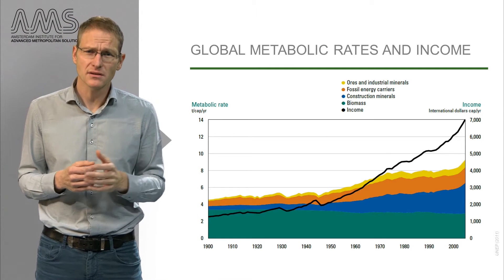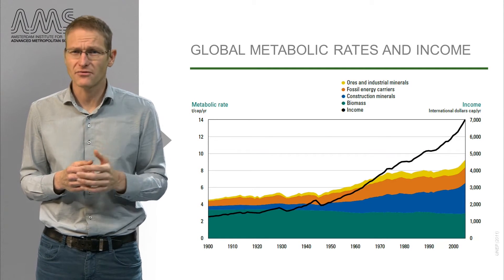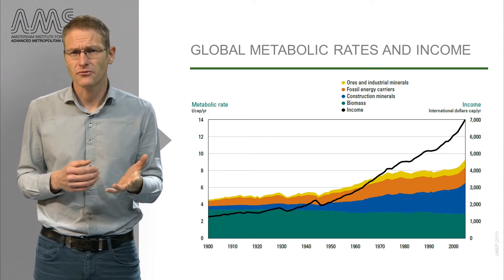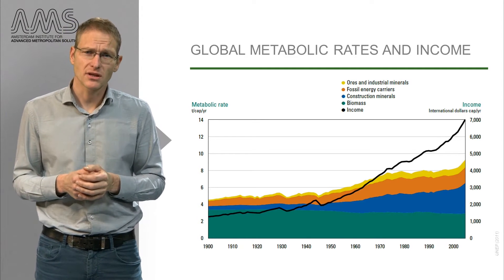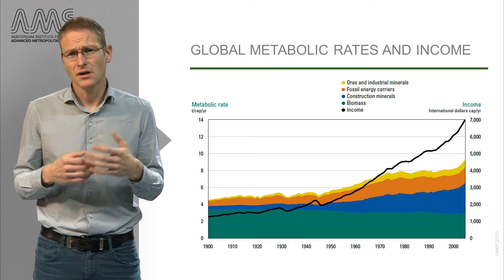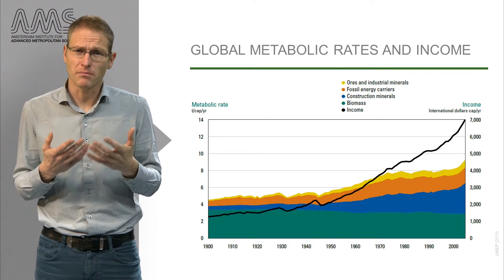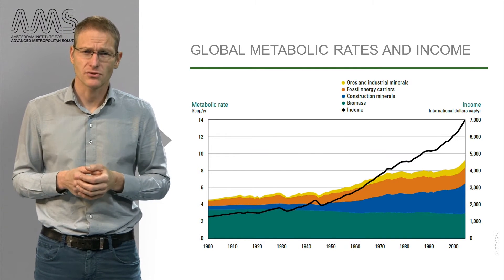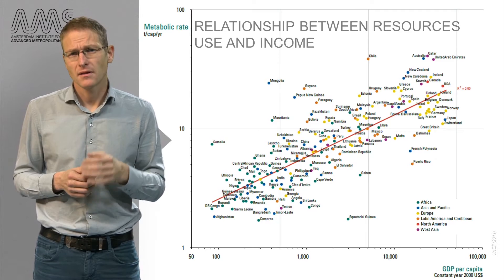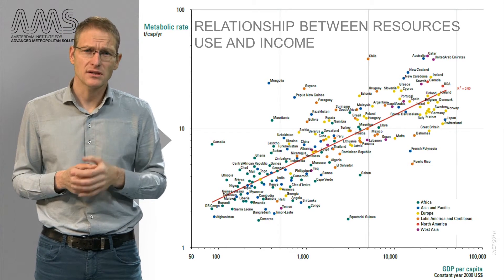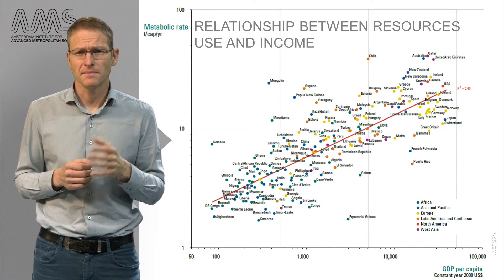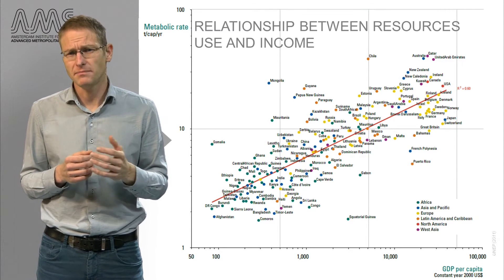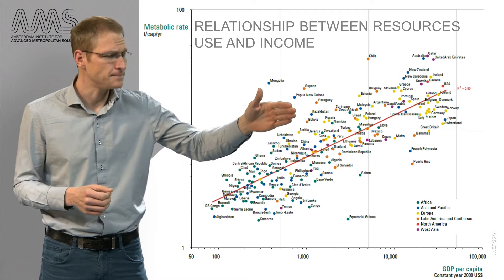Ores and industrial minerals use grew by a factor of 27, and fossil energy carriers by a factor of 12. Biomass extraction increased only 3.6-fold, because earlier much more biomass for power production was used, which is now replaced by fossil fuels. This trend is also confirmed by another study that compared the metabolic rates of countries with their GDP, shown here in the diagonal line.